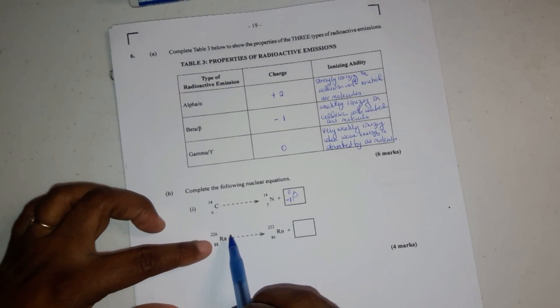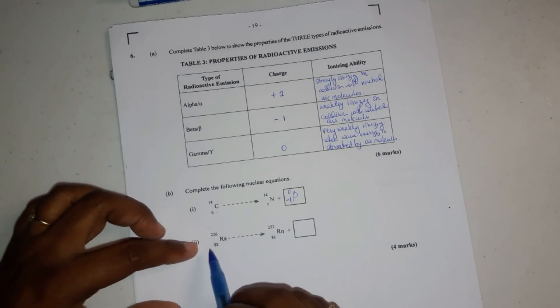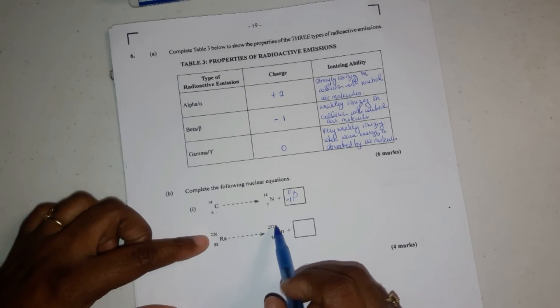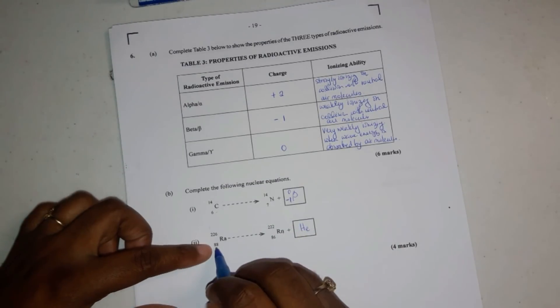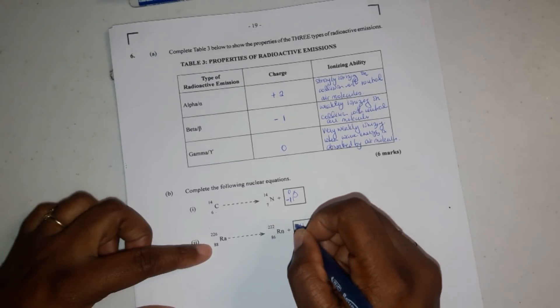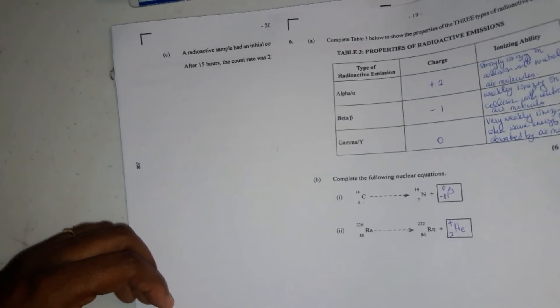Okay, this one, we're going from radium to radon, and so we're going from 226 to 222, so we had a mass loss of 4. So whenever we have a mass loss of 4 and a proton number loss of 2, it's the alpha particle, helium. 4 easy marks right there.